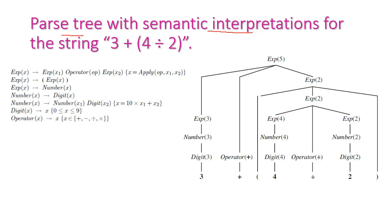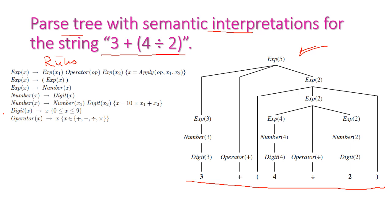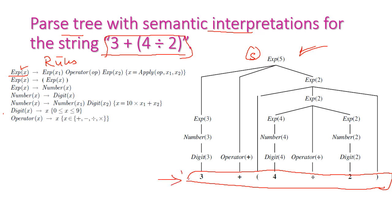The parse tree with the semantic interpretation of the string '3 plus 4 divided by 2' is shown here. Rules for numerical expressions are given, and this is the equivalent parse tree for the expression 3 + 4 / 2. In a top-down approach, we start with the starting state 'expression' and reach the given string at the bottom. In a bottom-up approach, we start from the given expression and reach the starting symbol. In both cases, we reach the final expression, which is accepted by the grammar.